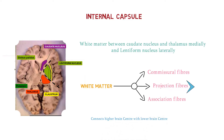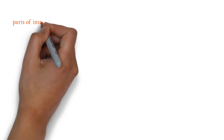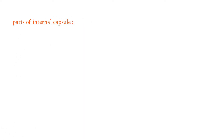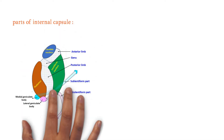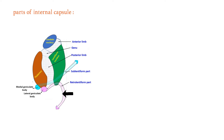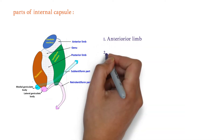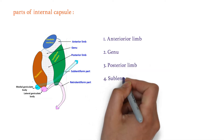Now let's discuss the parts of the internal capsule. Looking at this diagram, we have the anterior limb and the posterior limb. Between these two limbs is the genu. Below the lentiform nucleus is the sublentiform part, and behind the lentiform nucleus is the retrolentiform part. So the parts are: anterior limb, genu, posterior limb, sublentiform part, and retrolentiform part.